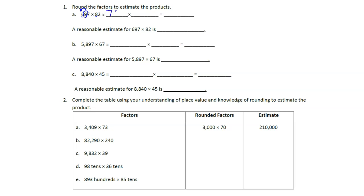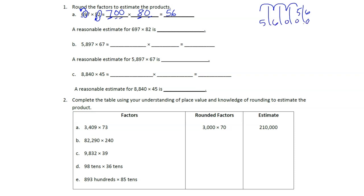So we're going to round to the nearest hundred for the first factor and the nearest ten for the second. When rounding, we always look at the place value unit to the right of whatever we're rounding to. Our tens digit is nine, so the six rounds up to 700. For 82, the two is in the ones place, so we keep it at 80 — remember: five or above, give it a shove; four or below, we let it go.